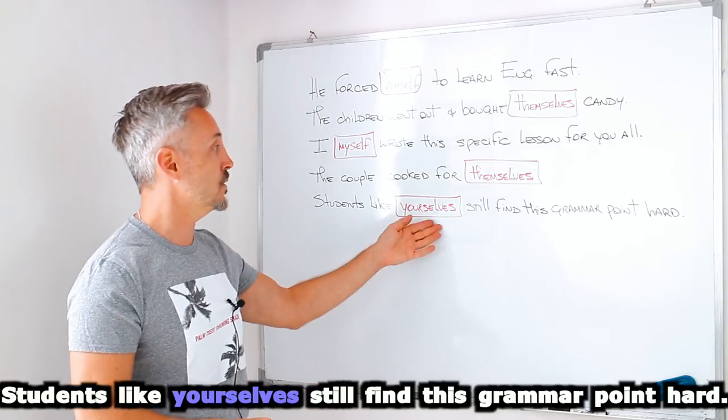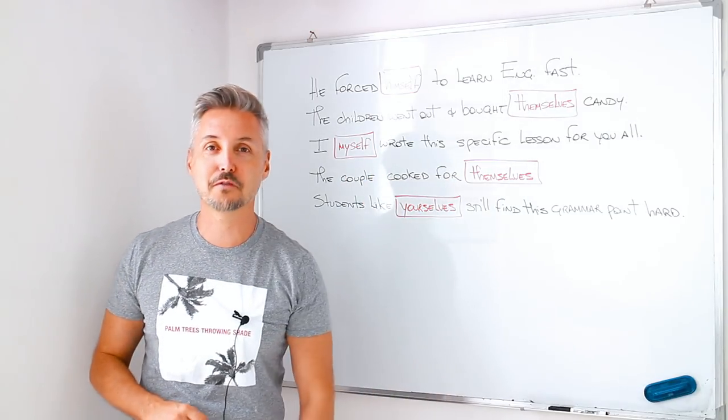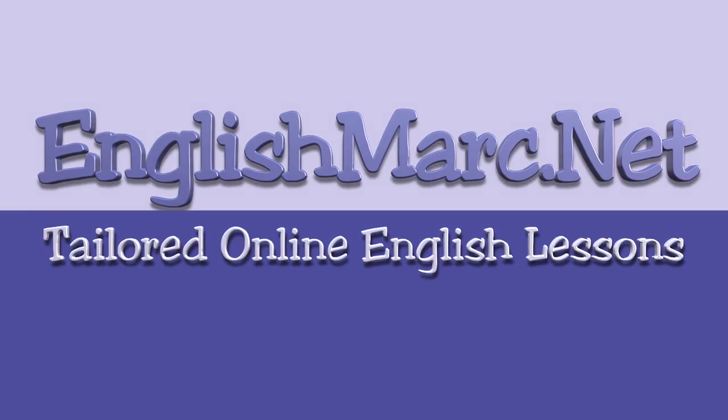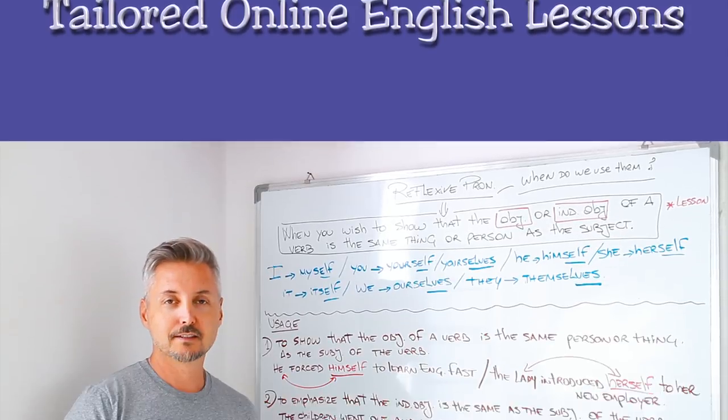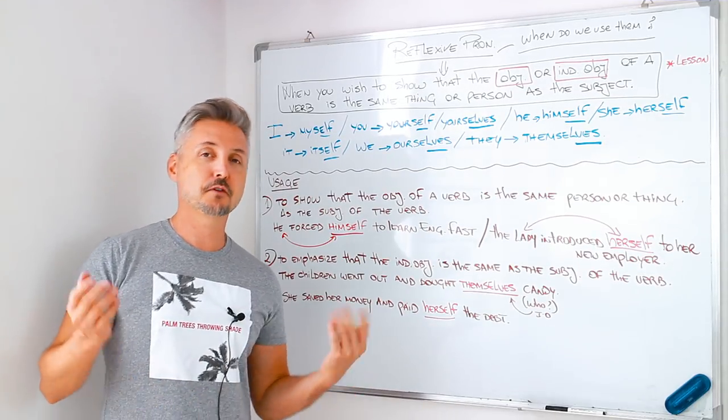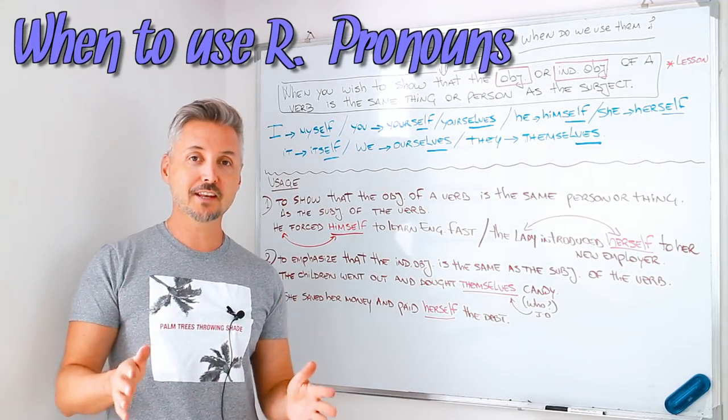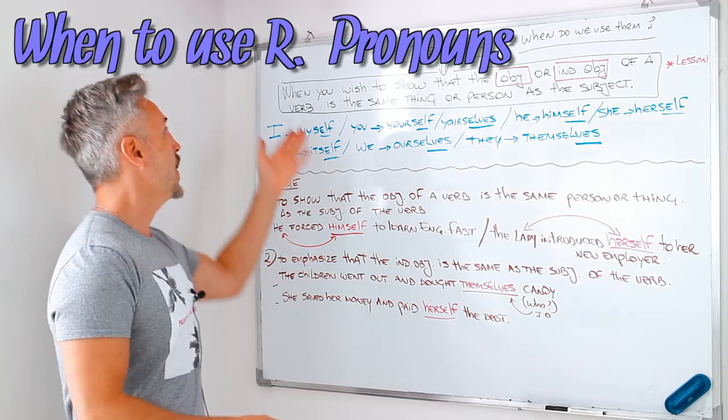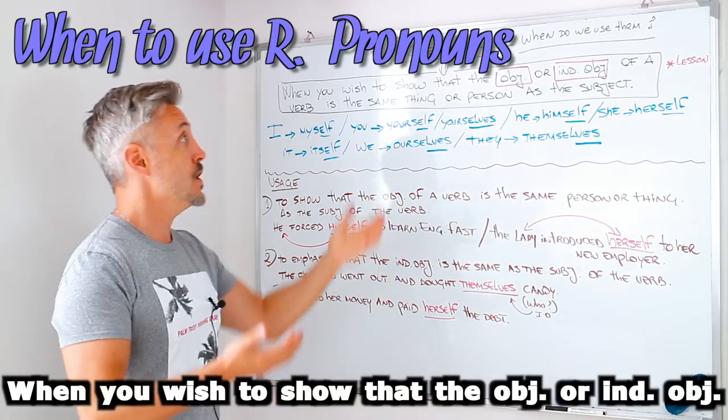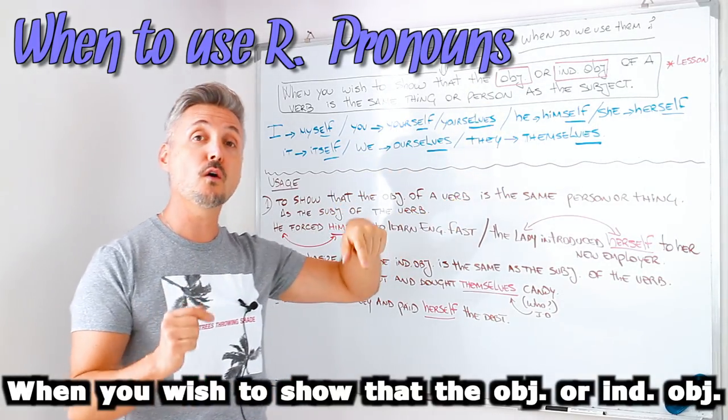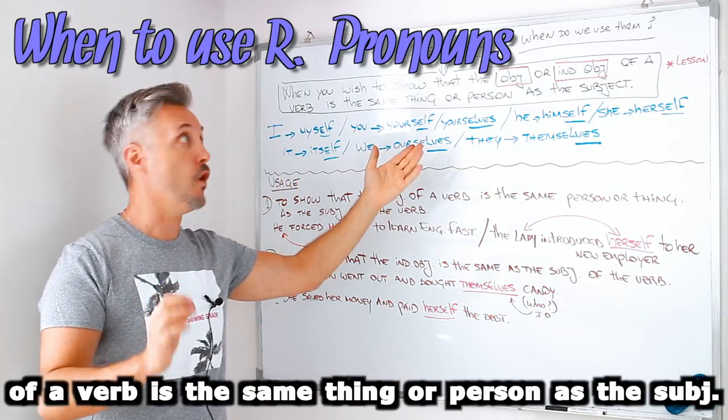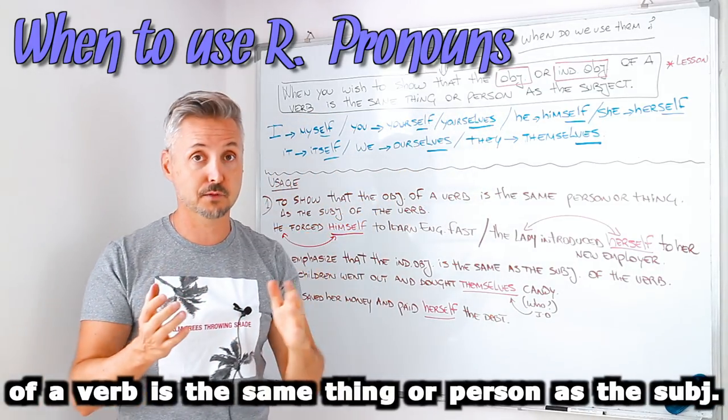In this lesson, we're going to look at reflexive pronouns. So stay tuned. That's right, reflexive pronouns. When do we use reflexive pronouns? When you wish to show that the object or the indirect object of a verb is the same thing or person as the subject.